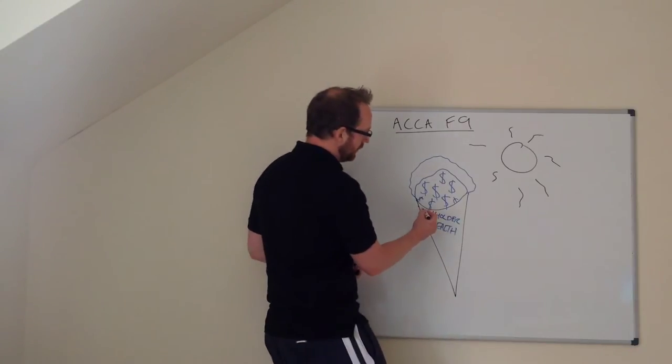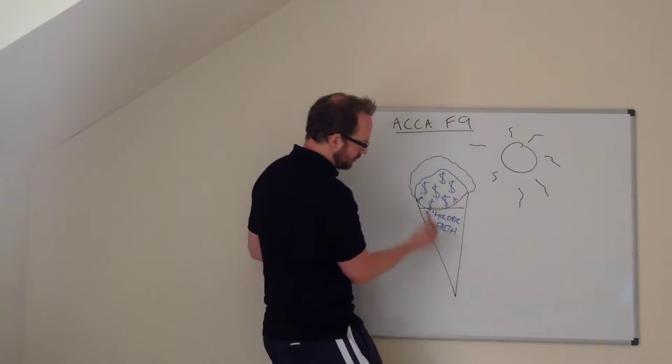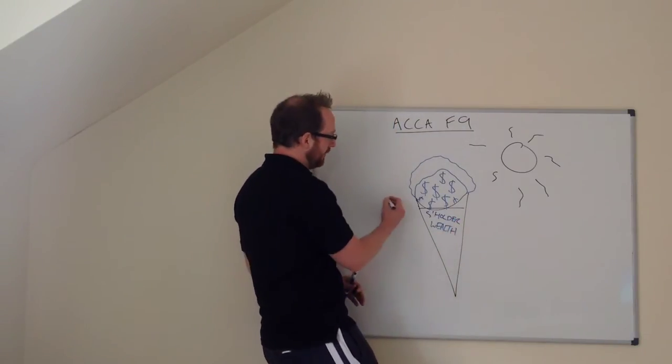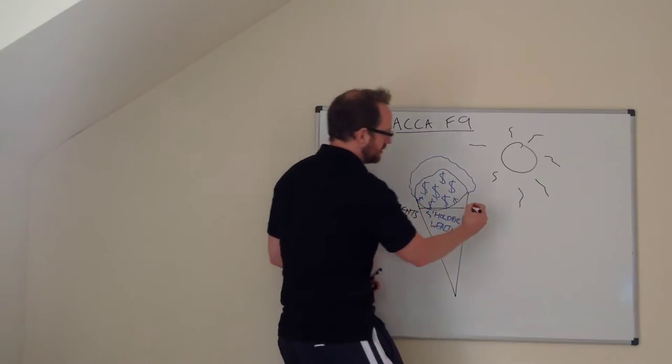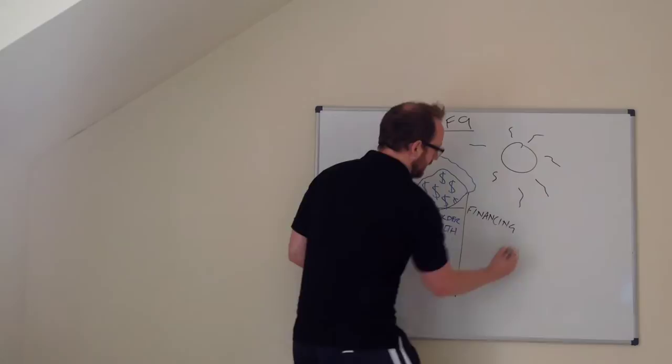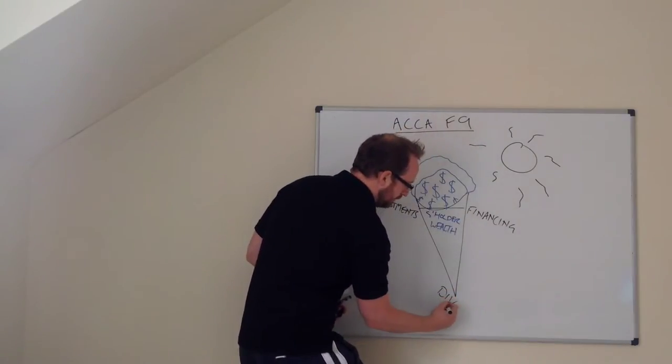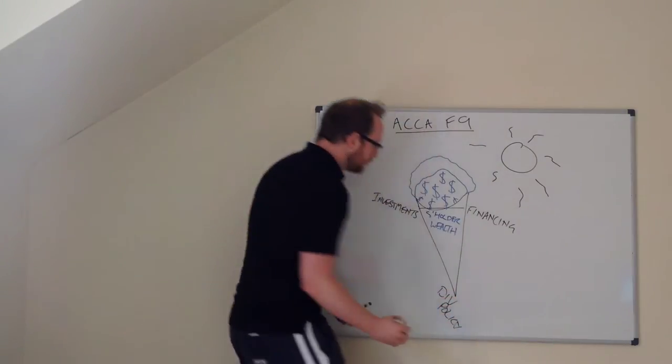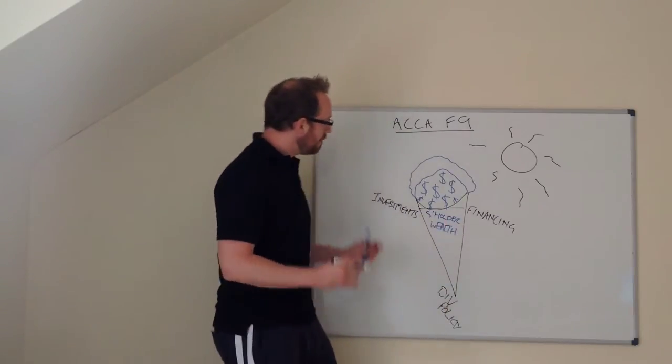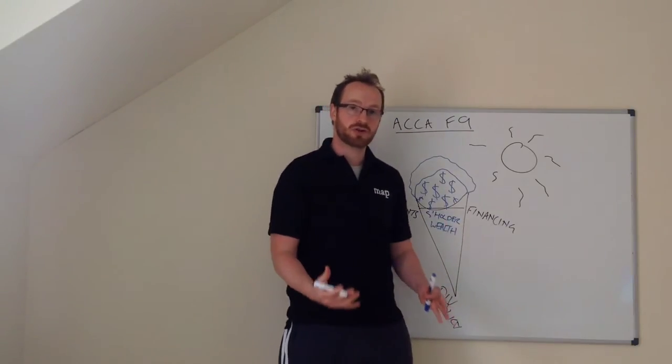Well F9 is often thought of as a triangle. That's why we're looking at this cone and the core areas of the F9 syllabus are investments which is one of the key aspects, financing and then dividend policy. And those are often looked at in a triangle which is why we're doing this because they're so interlinked.